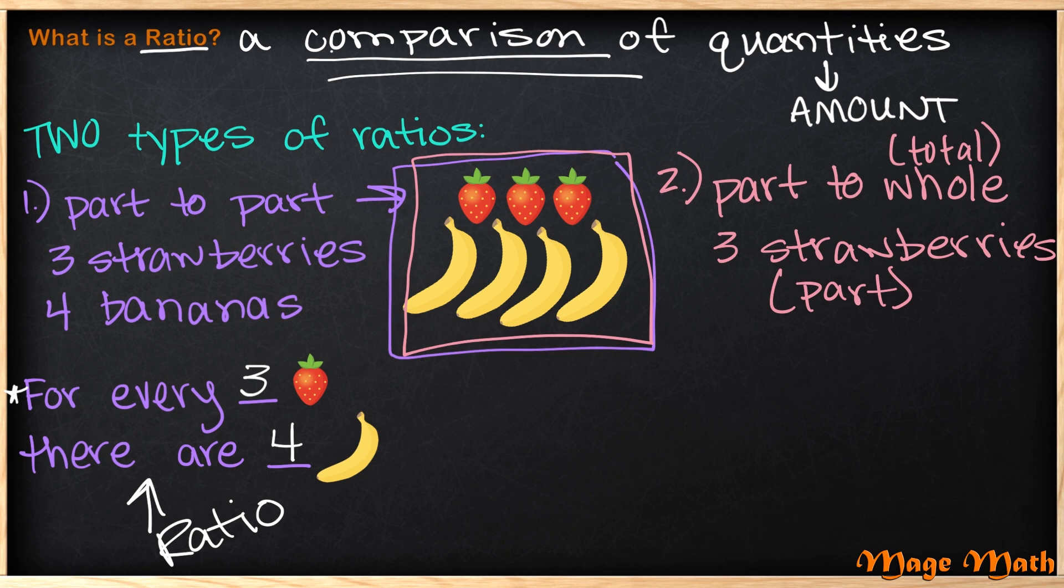Then what would our whole be? Did you guess seven? Seven is correct because we see that we have one, two, three, four, five, six, seven fruits. And that is our total number of fruits, or our whole.